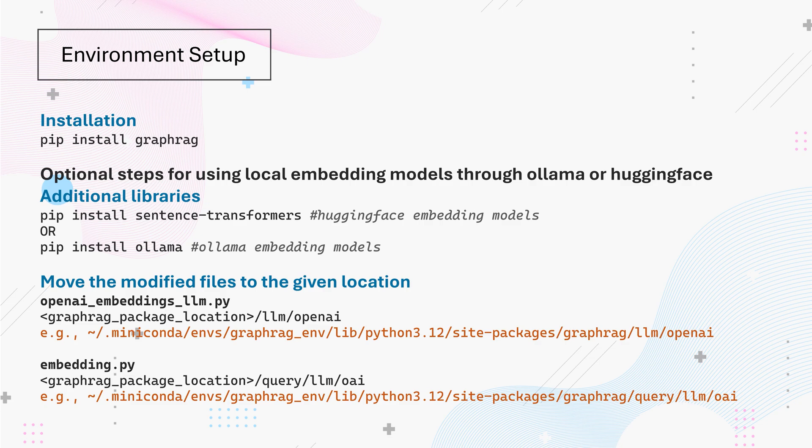For this demo, I will be using Graph RAG version 0.3.6, which is the latest version of the library at the time of recording this video. Along with this, I will also install some additional libraries so that we can create the knowledge graph using various combinations of language models as well as embedding models. Out of the box, Graph RAG does not support embedding models other than OpenAI's embedding models, so we will be modifying two files which will allow us to use embedding models from HuggingFace or Ollama.